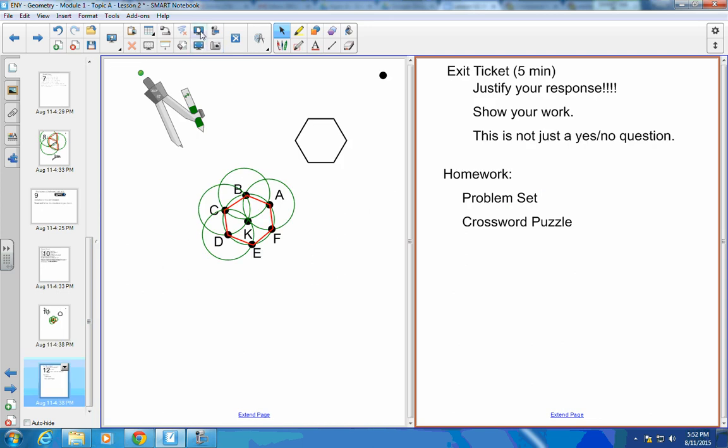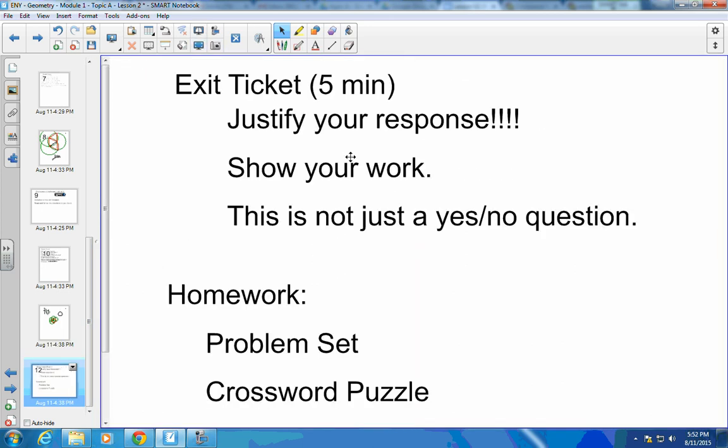So tonight for homework, you need to do your exit ticket. Spend about five minutes. Justify your response. It's not a yes, no question even though it's phrased as one. Make sure you show your work to justify why it is exactly what you say. And then do the problem set for the homework. I think it's one question. And there is a crossword puzzle. You can find it online on my website or you can get it from me during class.